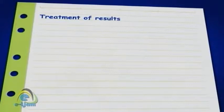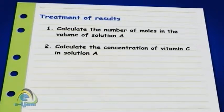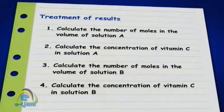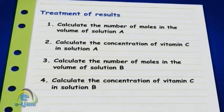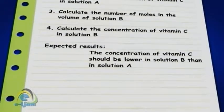Treatment of results: Calculate the number of moles in the volume of solution A. Calculate the concentration of vitamin C in solution A. Calculate the number of moles in the volume of solution B. Calculate the concentration of vitamin C in solution B. Expected results: the concentration of vitamin C should be lower in solution B than in solution A.